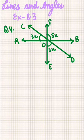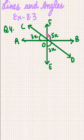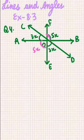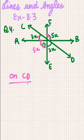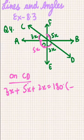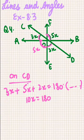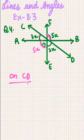In Question 4, we have to find the value of x. The angle 5x and its vertically opposite angle are equal. On line CD, the angles 3x, 5x, and 2x together equal 180 degrees, because they are angles on a straight line. So 10x equals 180 degrees, and x equals 18 degrees. This is the answer to Question 4.